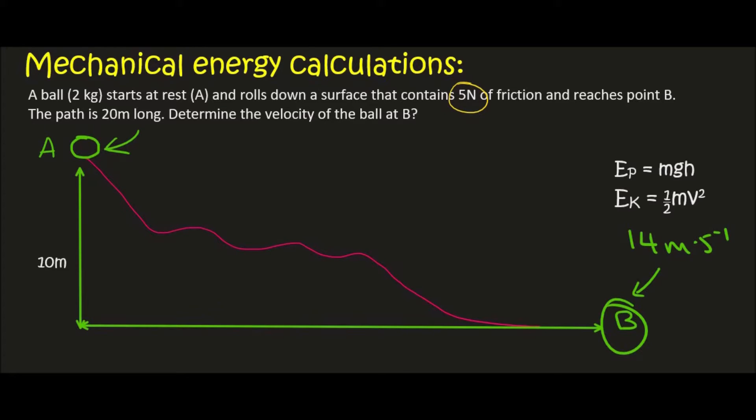So what we would expect is that the energy at A, the total energy at A, will be more than at B because along the journey energy is going to be lost due to friction.